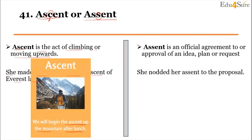Next, our word is 'assent.' Assent is an official agreement to or approval of an idea, plan or request. Basically, assent means an agreement or approval. For example: 'She nodded her assent to the proposal,' meaning she showed her agreement with a nod.